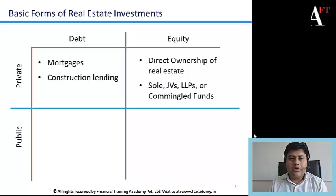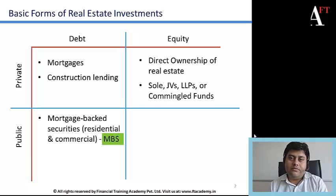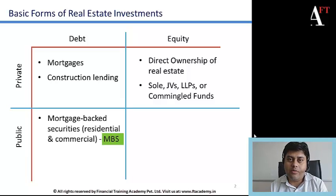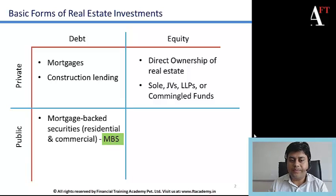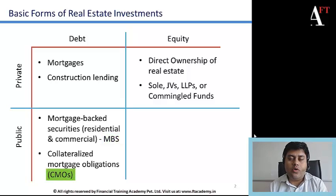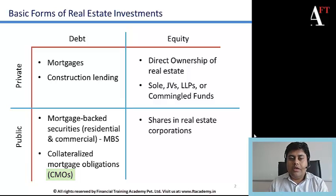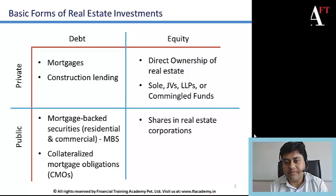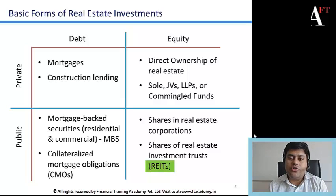On the public side, when you invest in a mortgage-backed security — whether backed by residential or commercial properties — it is a public form of debt security. Many MBSs are traded in the market. An investor can also choose to invest in collateralized mortgage obligations, which we'll cover in later slides. For public equity, the most straightforward form is buying shares of real estate companies.